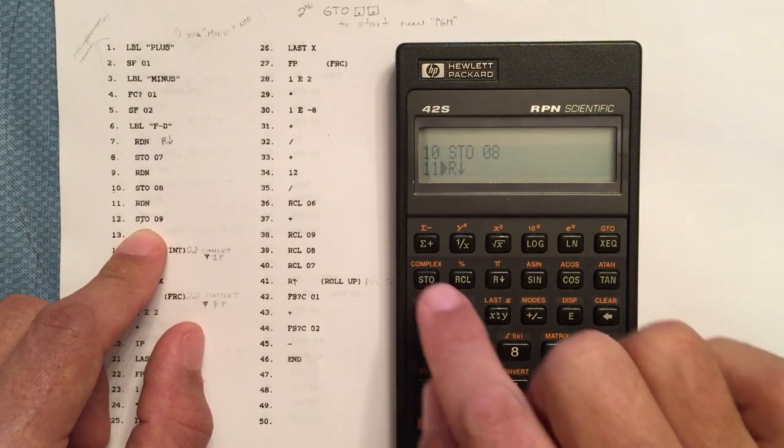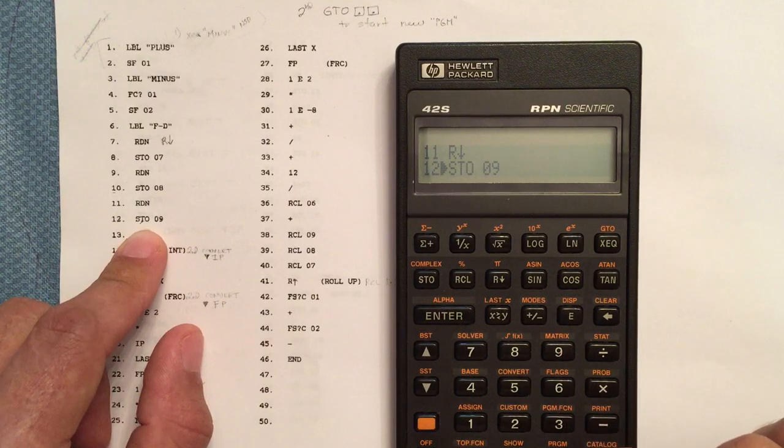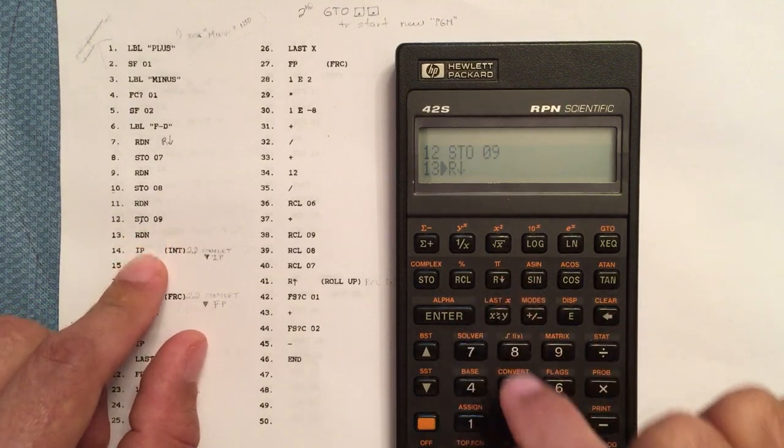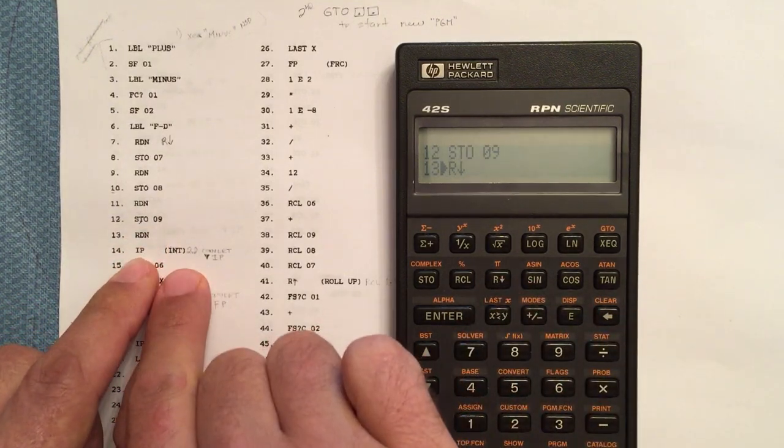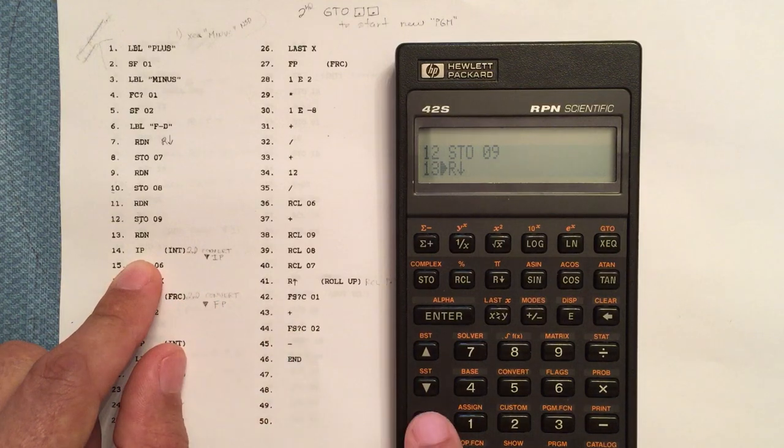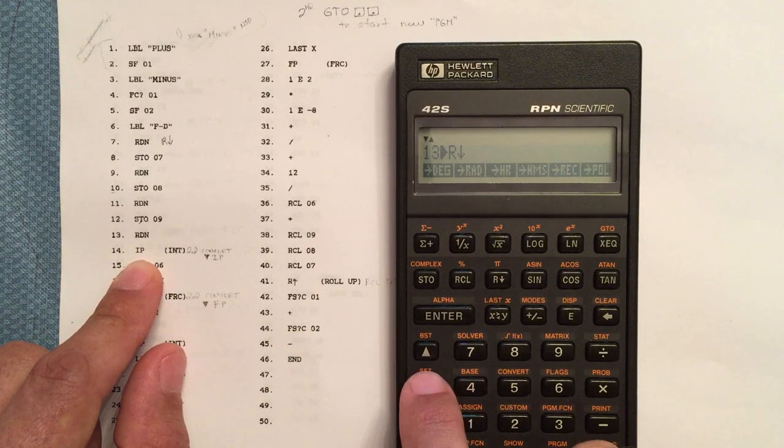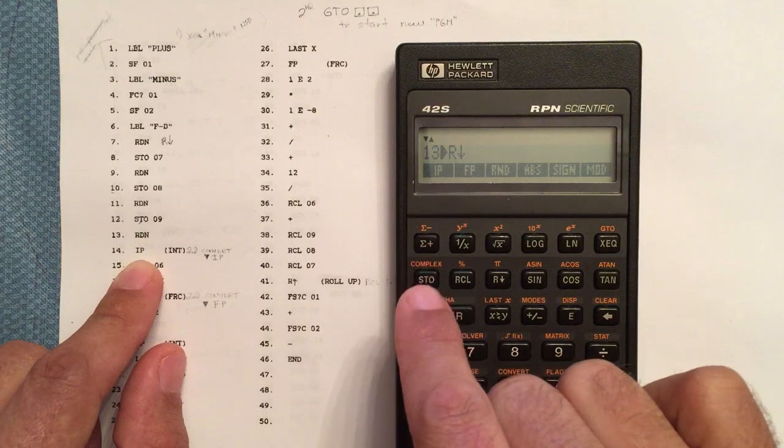This IP is the integer portion, it's going to be under the same menu the convert menu as the fractional portion was. So again, if we had a number like 2.3, the integer portion would be 2. So we take the integer portion.